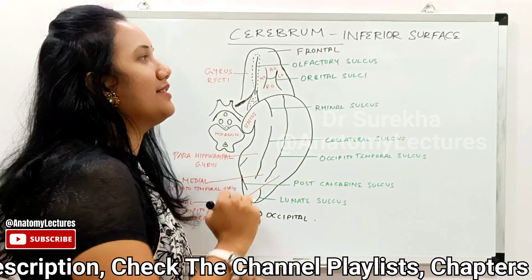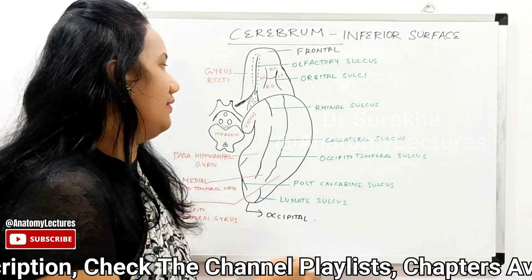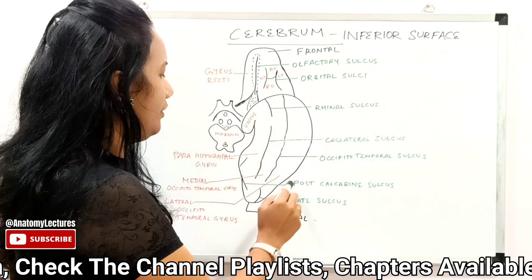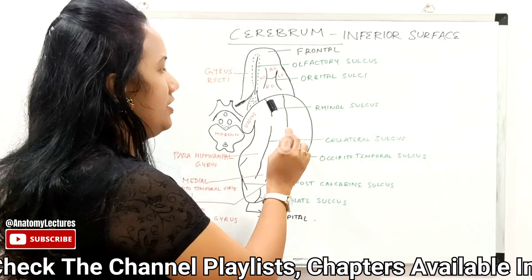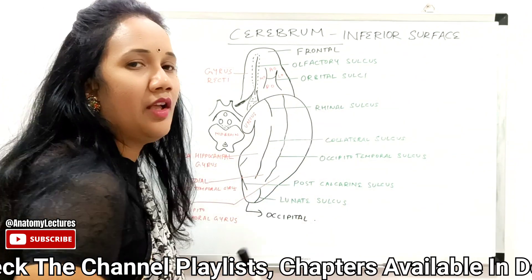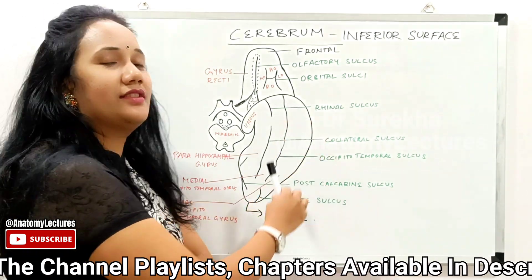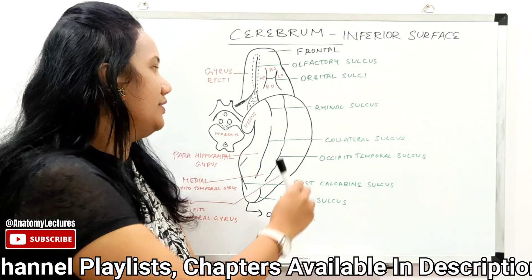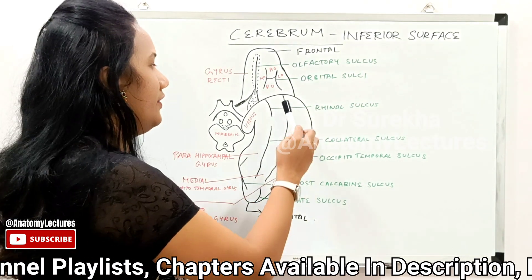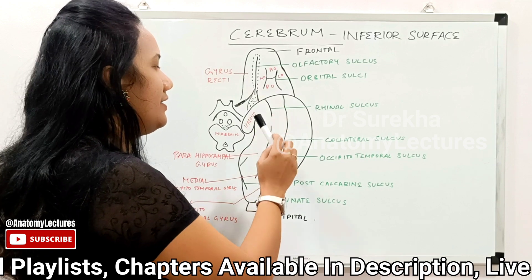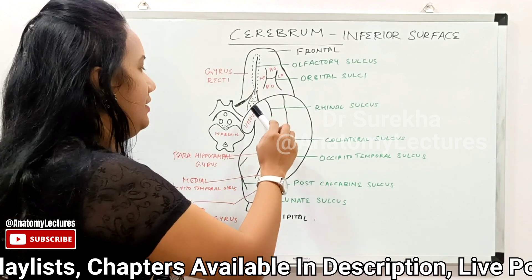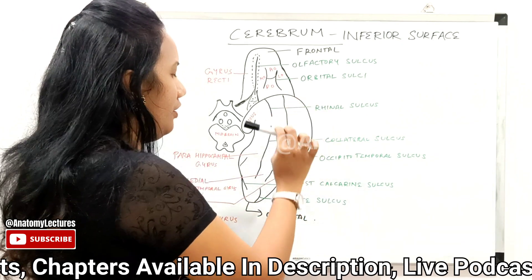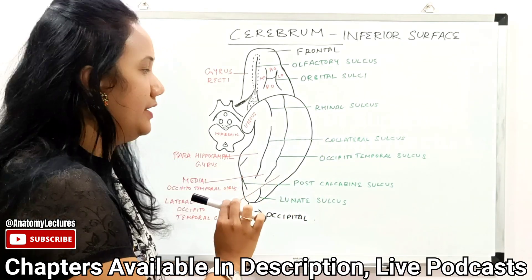That is about the orbital surface. Coming to the tentorial part of the inferior surface: this tentorial part is formed by the temporal lobe and the occipital lobe. The tentorial part of the inferior surface has a hook-like extension which is called the uncus.